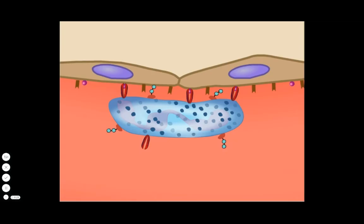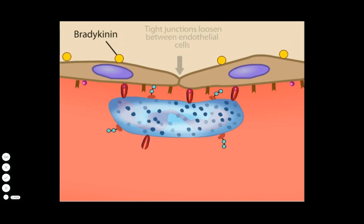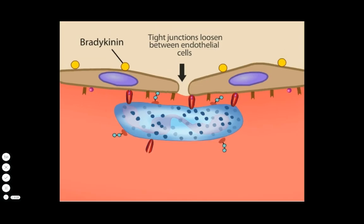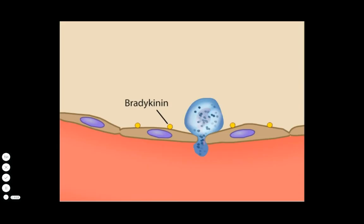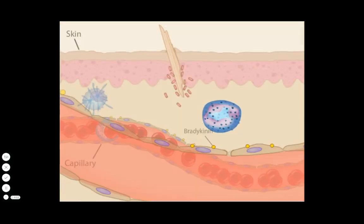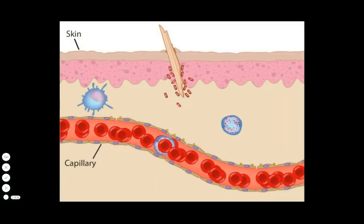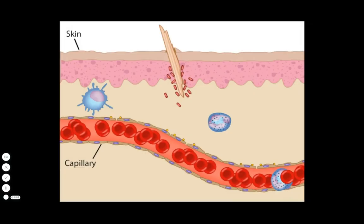Damaged tissue cells in the area of inflammation release bradykinin, a 9-amino acid polypeptide that helps loosen the tight junctions between endothelial cells. Neutrophils can now initiate extravasation, in which they squeeze through the loosened endothelial wall and into the tissues where they can help macrophages attack the invading microbes.